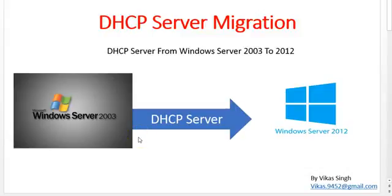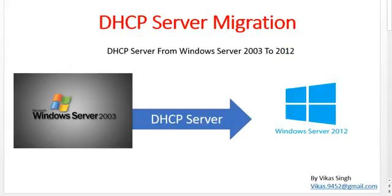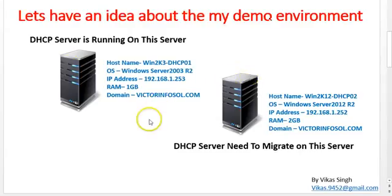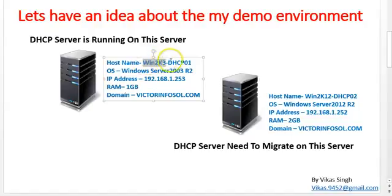Hello friends, welcome to my channel. Today I am going to show you how to migrate a DHCP server from Windows Server 2003 to Windows Server 2012. In this demo environment I have two machines. The first one is WIN2K3-DHCP01, and the operating system installed on this machine is Windows Server 2003 R2.